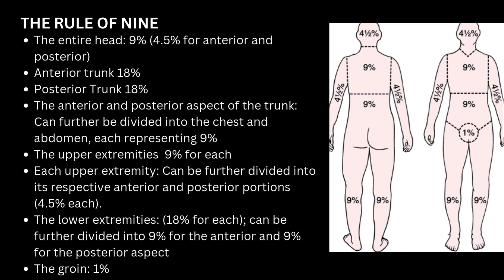Moving down to the upper limb — right and left, each of them is 9%. The anterior part of the upper limb is 4.5% and the posterior part is 4.5%, so the whole upper limb is 9%. Each upper limb is 9%.